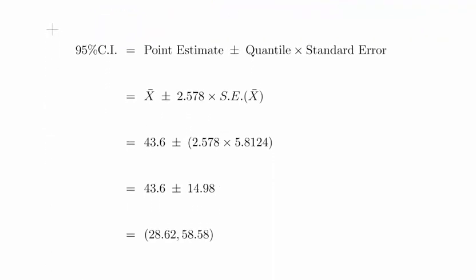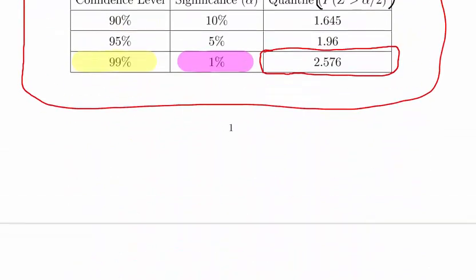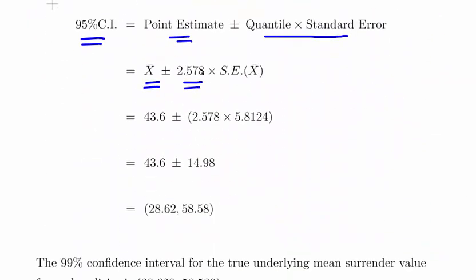So I think we're just ready now to put everything together. Our 95% confidence interval is our point estimate plus or minus our quantile times standard error. X bar plus or minus 2.578, I think that should be 6, I think that's a typo. Yeah, 2.576, not a big typo, but it might make my numbers a little bit off. So 43.6 plus or minus 2.576 times 5.8124. We should get numbers close to this. 43.6 plus or minus 14.98. So that is 28.62 and 58.58.